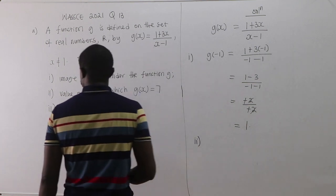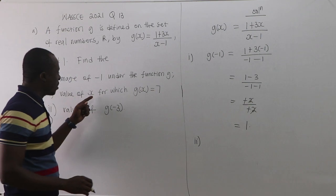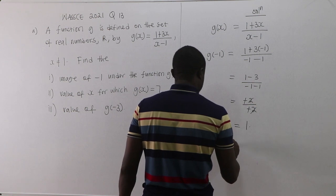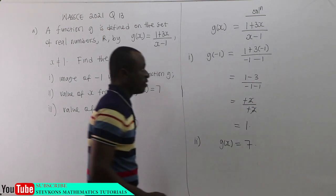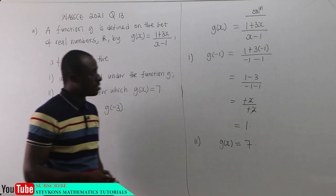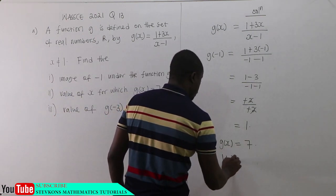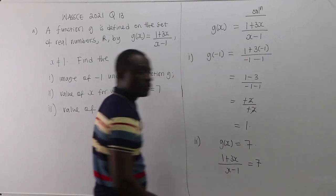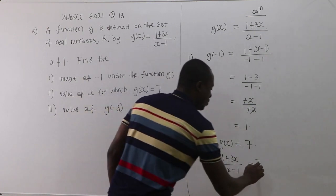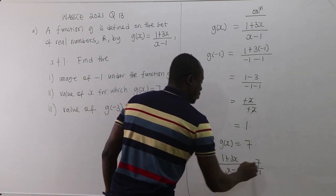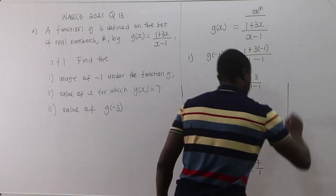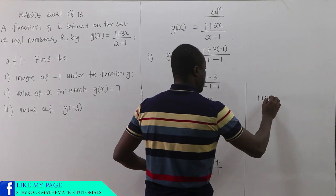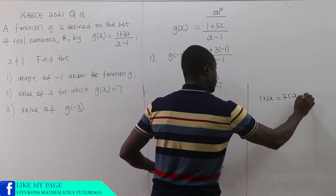Now let's see the second one: find the value of x for which G(x) = 7. So we have G(x) = (1 + 3x) / (x - 1) = 7. We can write 7 as 7 over 1, then cross multiply to get 1 + 3x = 7(x - 1).